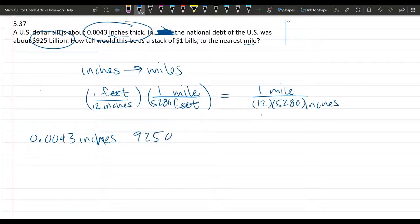Alright, so how many zeros in a billion? That would be 925,000. 925 million. 925 billion. Alright, so that's one dollar bill thickness in inches times this many dollar bills. So this will be the total height in inches.